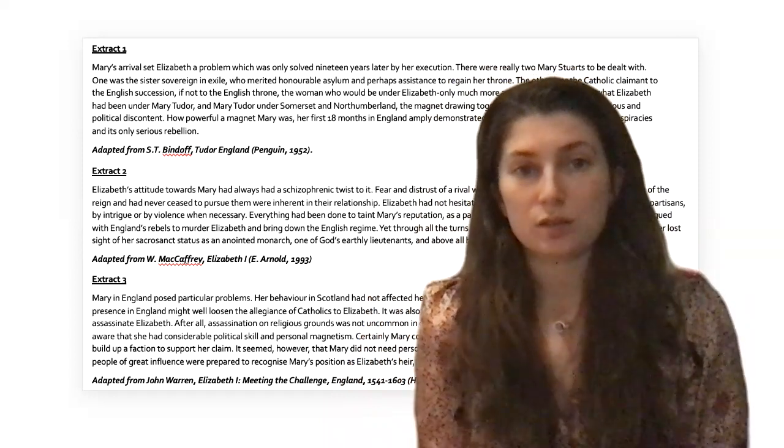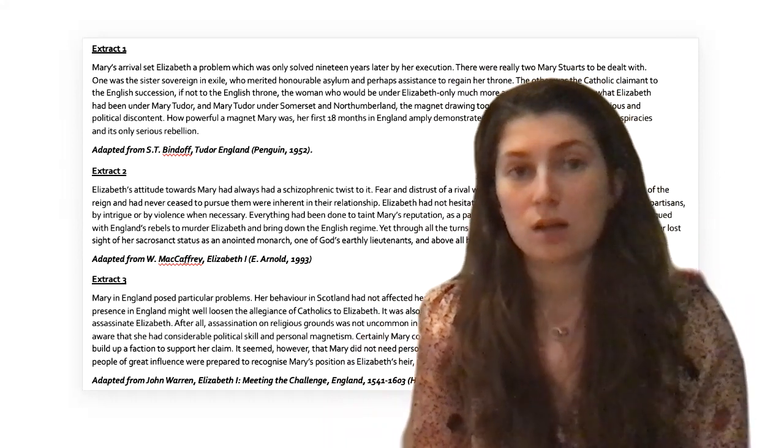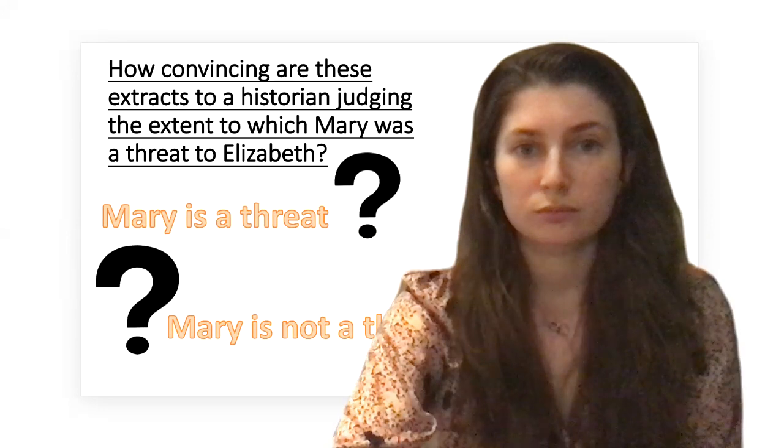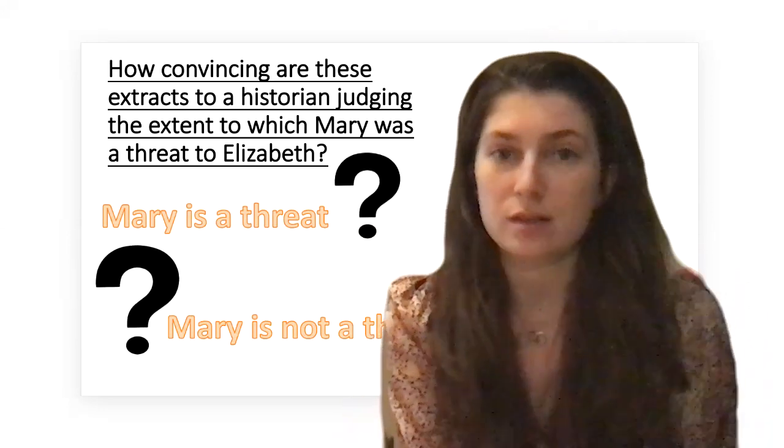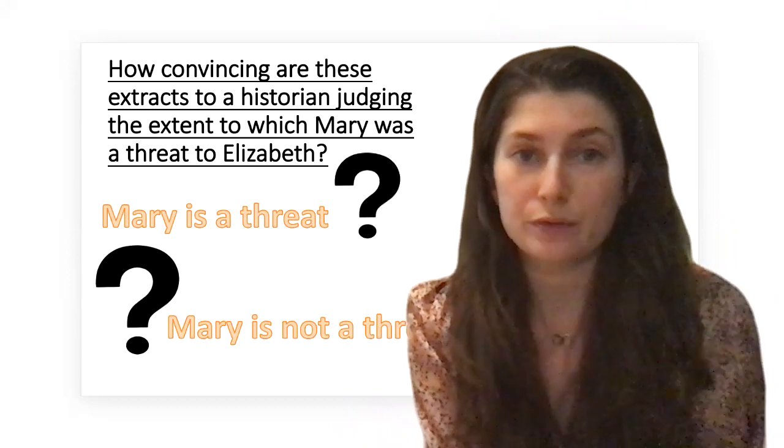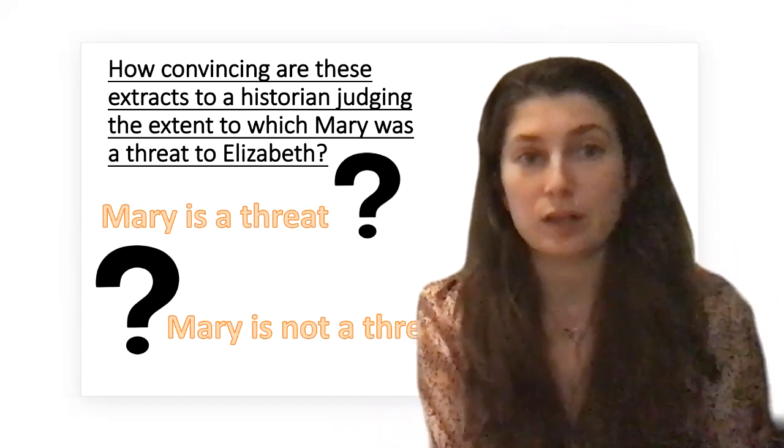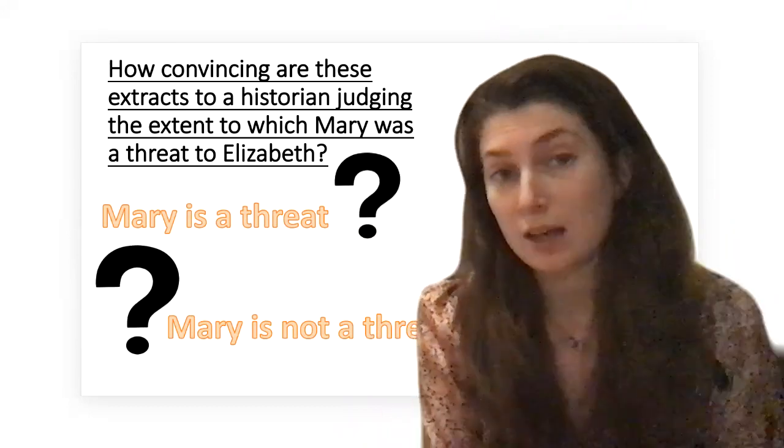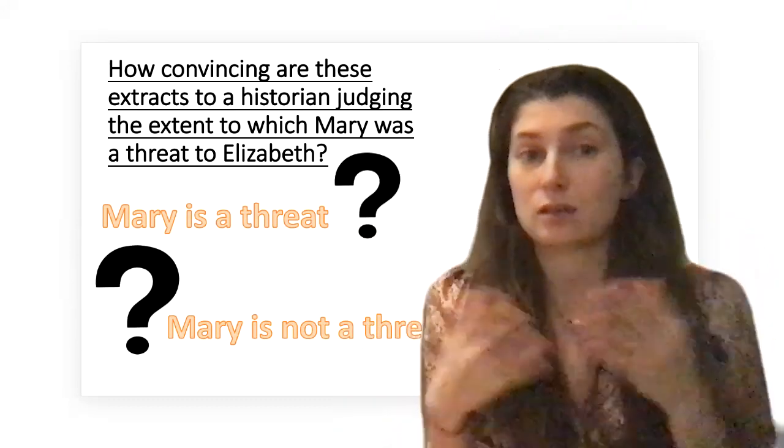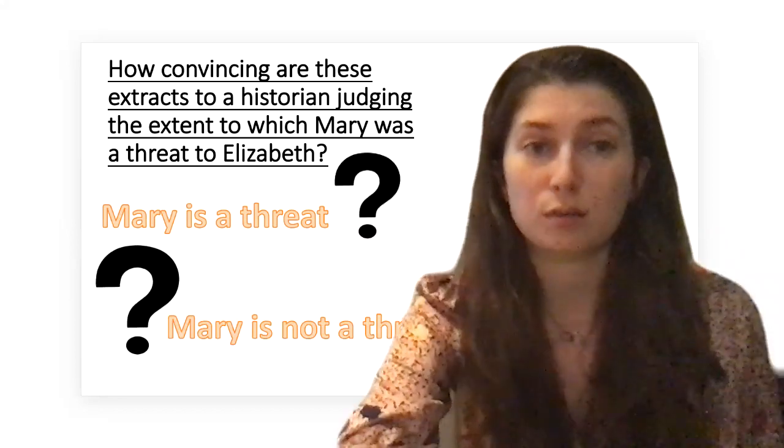I'll show you the three extracts I'm going to focus on in depth. I'll move out the way in a second so you can pause the video and screenshot or copy out the extracts. This is the question we're going to answer: how convincing are these extracts to a historian judging the extent to which Mary Queen of Scots was a threat to Elizabeth? The most fundamental thing you need to work out as you read every single extract is: does it suggest she is or isn't a threat? As long as you can work that out for every extract, that's the first most important thing.